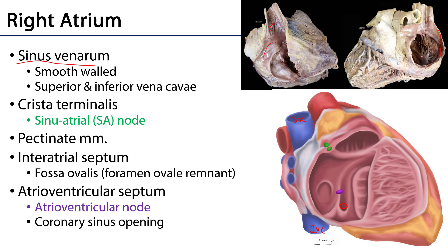We can contrast that from the anterior portion of the atria which has ridges in it. These ridges are pectinate muscles, so the myocardium is pushing the endocardium inward to form these ridges, and this region is separated from the sinus venarum by the crista terminalis.